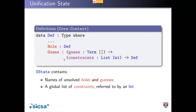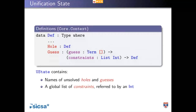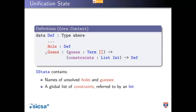A guess is an abstraction over an environment and then a term in that environment — the value it will have assuming all the constraints are satisfied. Once the list of constraints is down to the empty list, we can turn this guess into an ordinary definition which can then be evaluated. This is type checking in the presence of meta variables. We add holes and guesses as possible definition forms. Guesses have no computational force, so they won't reduce until all the constraints are satisfied. Once satisfied, we promote the guess into a PNDef — an ordinary pattern matching definition.